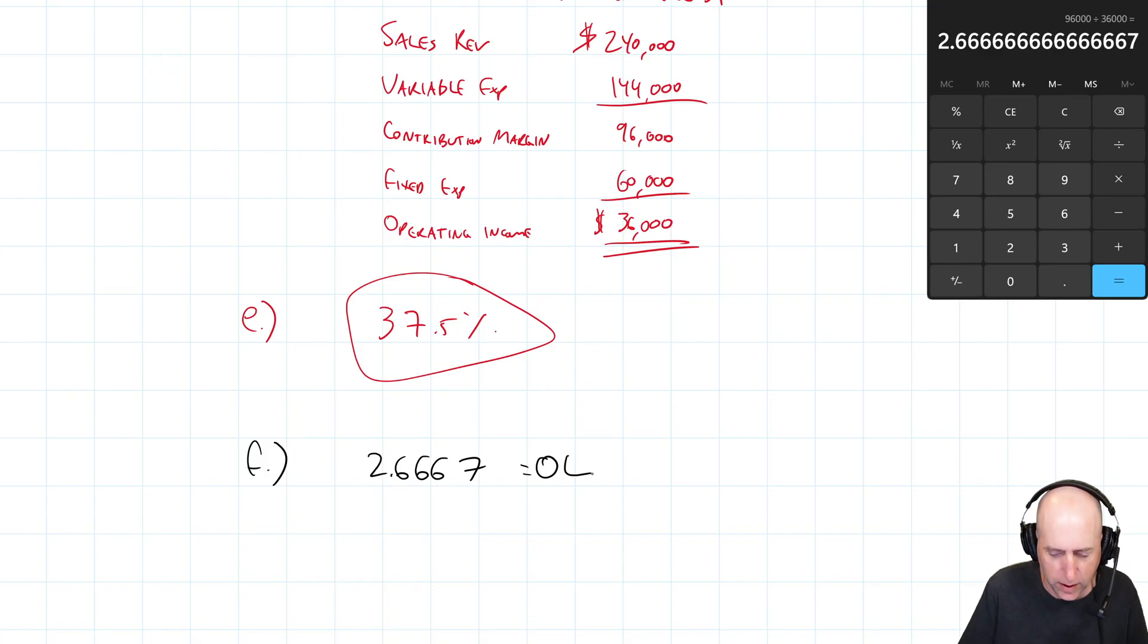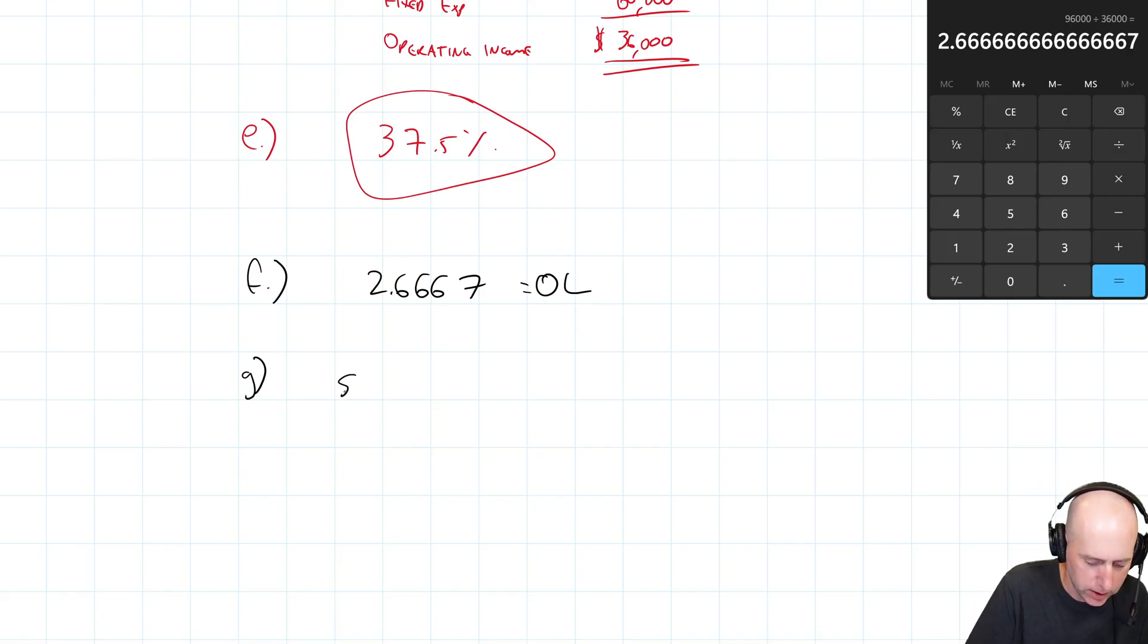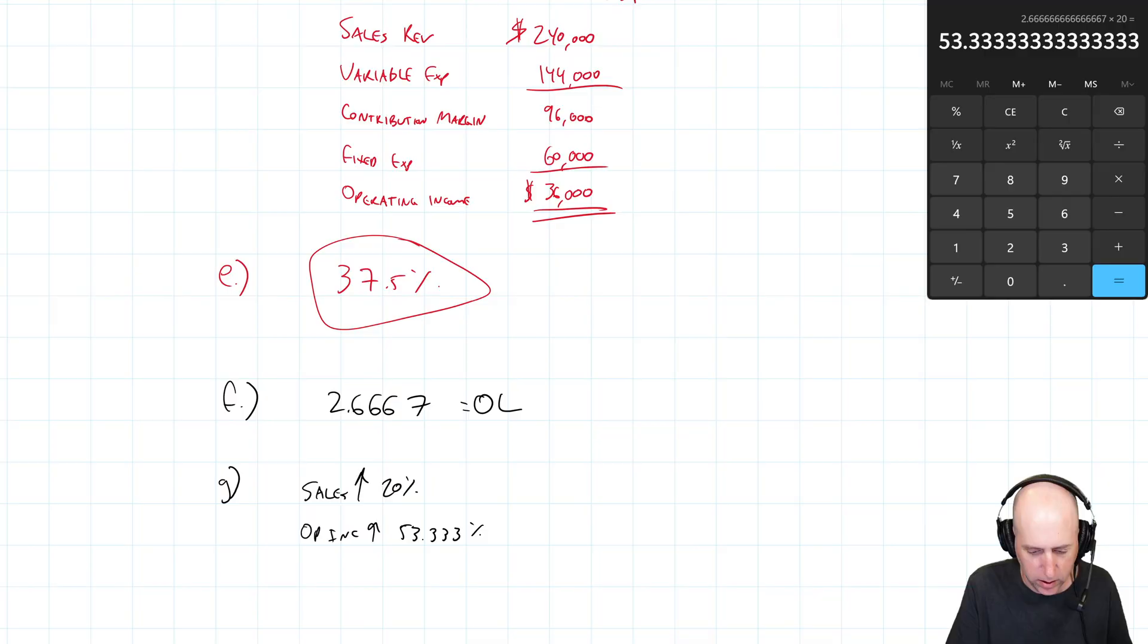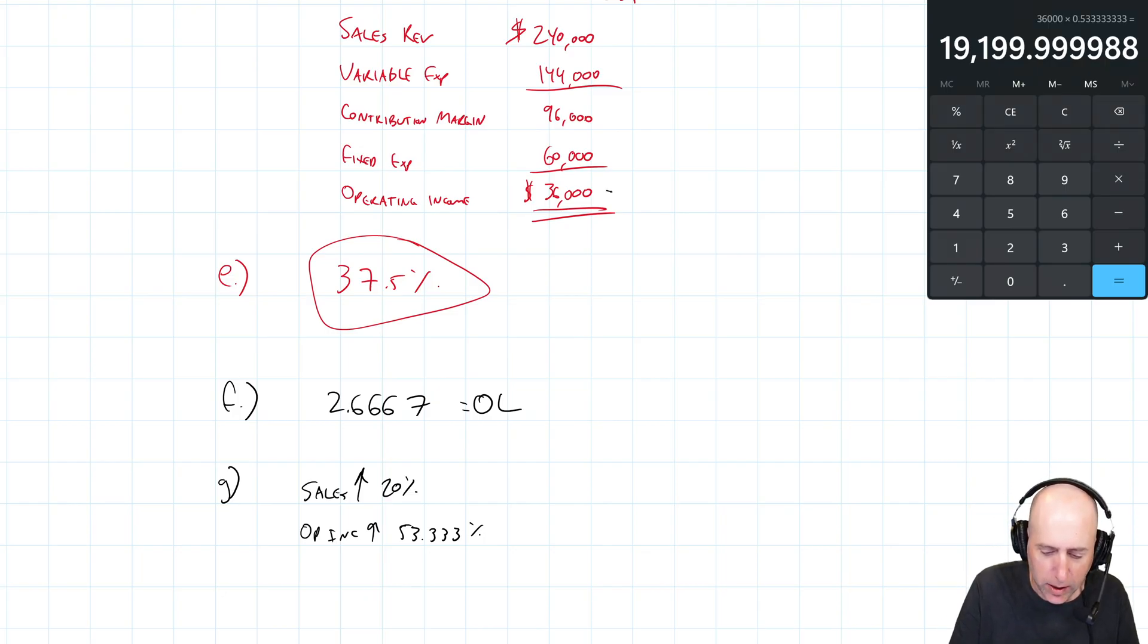And that's our operating leverage factor. G says if sales go up by 20% next year, how much is operating income going to increase? Well, if sales go up by 20%, operating income is going to go up by 20% times 2.66667. It's going to go up by 53.333%. Now, what does that look like? Well, it was at 36,000. So 36,000 times 0.5333333 is $19,200. So we think operating income is going to go up plus $19,200. So again, operating income is going up by $19,200. That's it. We've answered G.